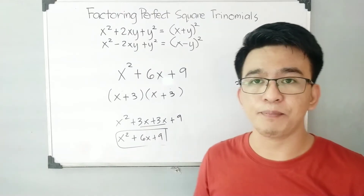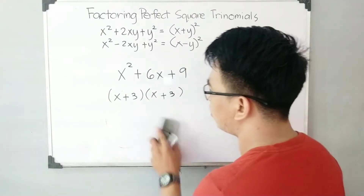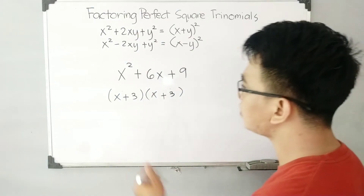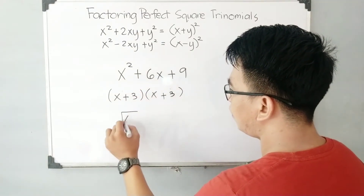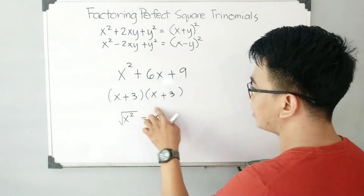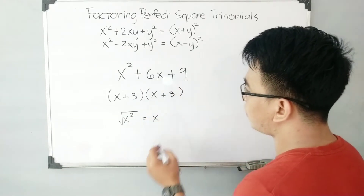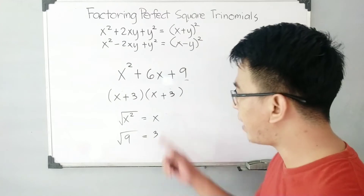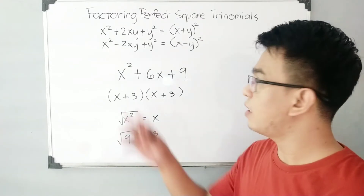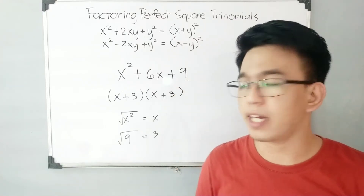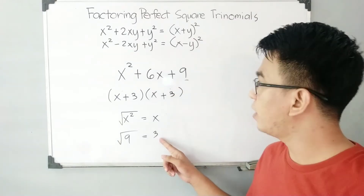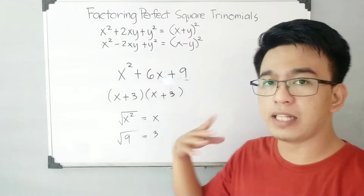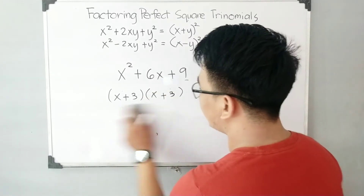This is called a perfect square trinomial. To identify if something is a perfect square trinomial: first, get the square root of the first term — if x squared is a perfect square, and get the square root of the last term, which is 9, giving us 3. Then check if multiplying that root by 2 gives you the coefficient of the middle term: 3 times 2 is 6. That's why this falls under perfect square trinomial.